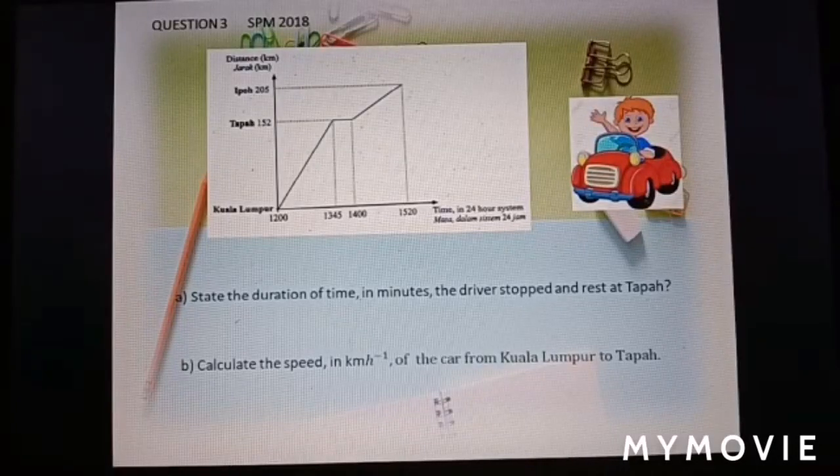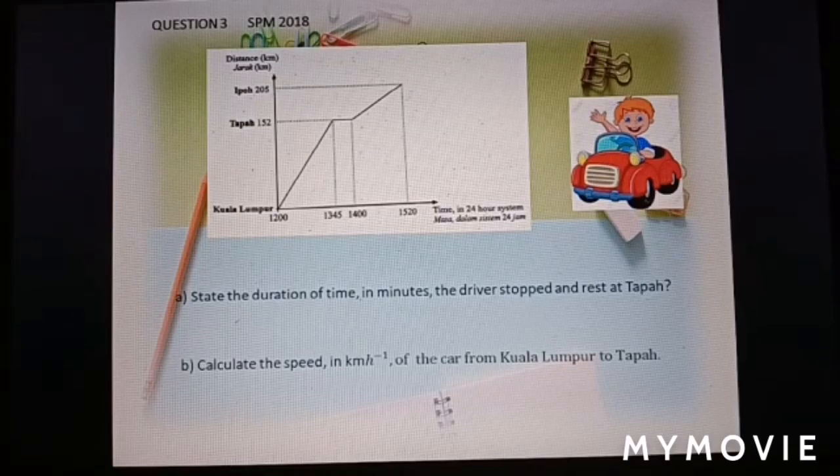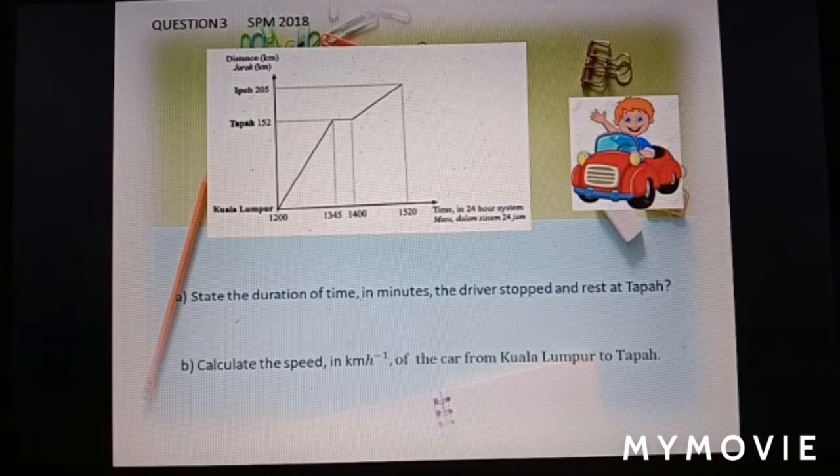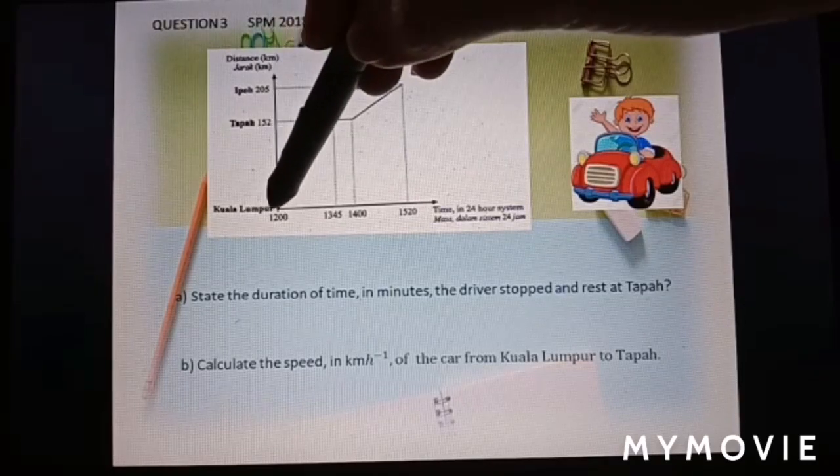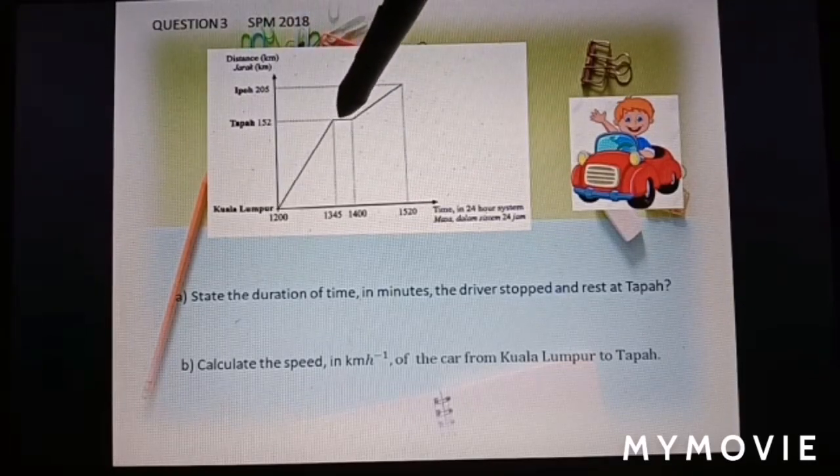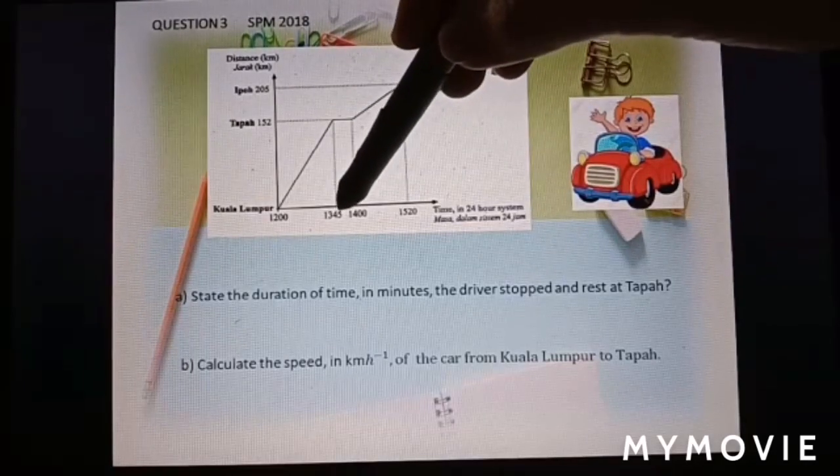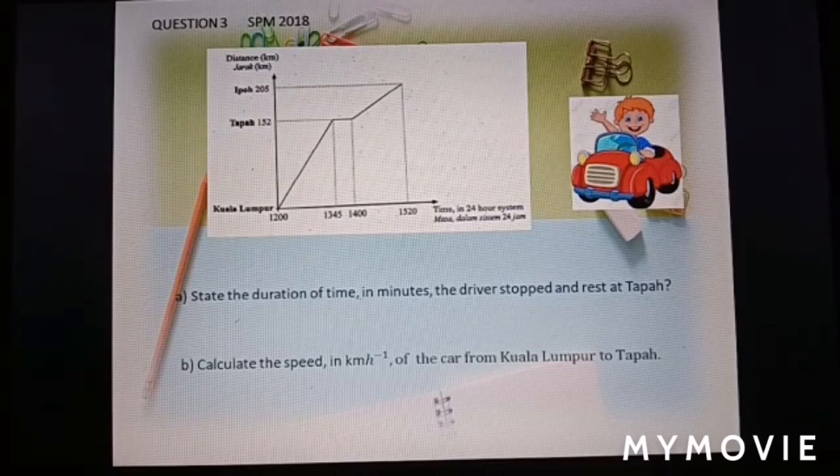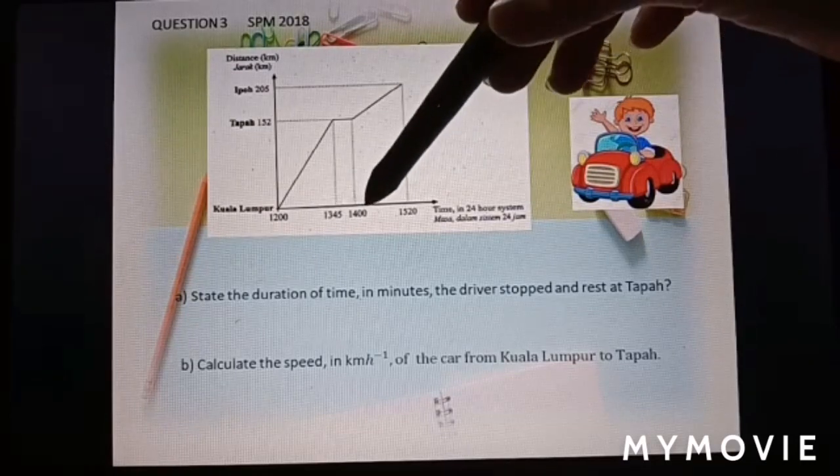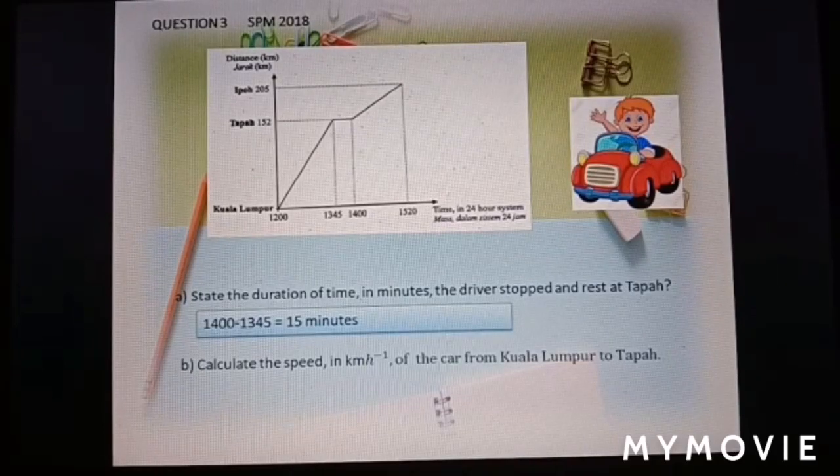Question number 3 is past year SPM 2018 question. Part A. State the duration of time in minutes, the driver stopped and rests at Tapah. Okay, so here, from Kuala Lumpur, go to Tapah. After that, rest. So, what is the duration here? From 13:45 to 14:00. From 1:45 to 2 o'clock, the duration is 15 minutes.